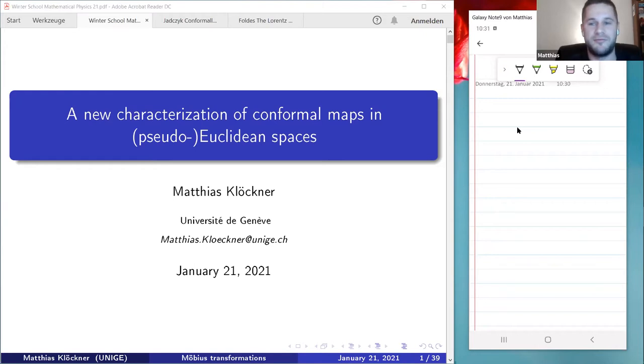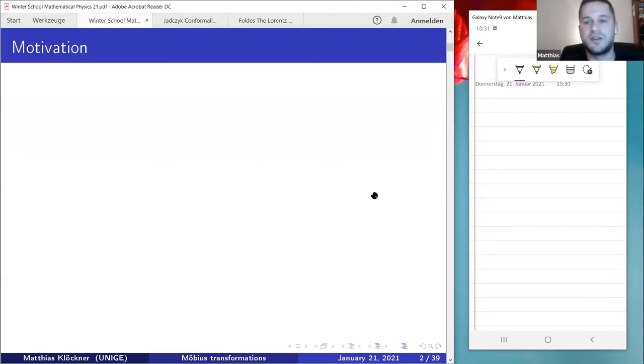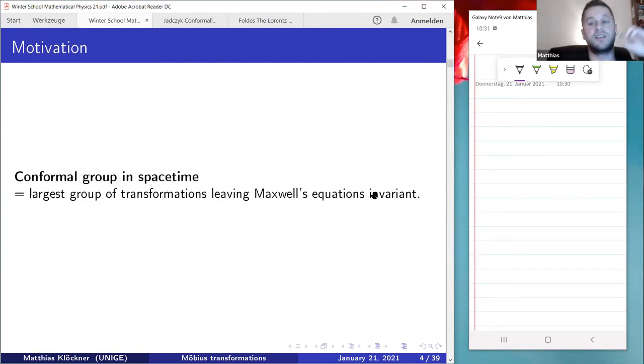I'll start by motivating why it's interesting to study the group of Möbius transformations. It's usually a synonym for the conformal group. Physicists like to call it the conformal group in space-time. It's really the same as the Möbius transformations, except for in two dimensions. It's the famous Liouville theorem, but here it's precisely the Möbius transformations and the conformal group is interesting because it's the largest group of transformations that leaves the Maxwell equations invariant.